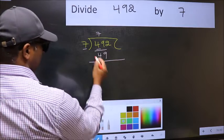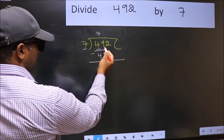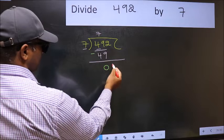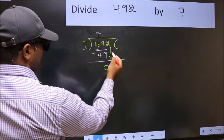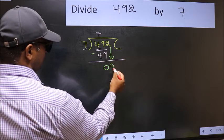Now you should subtract. 49 minus 49, 0. After this, bring down the beside number. So, 2 down.